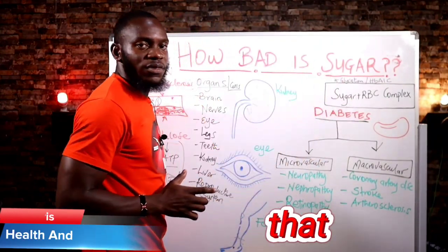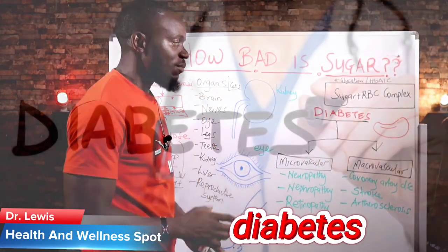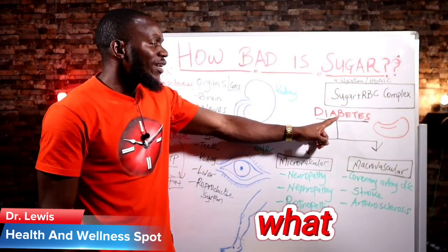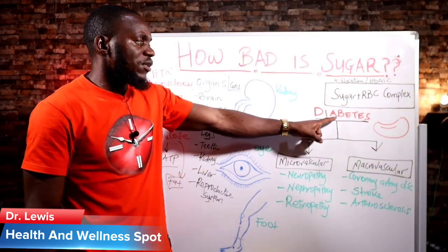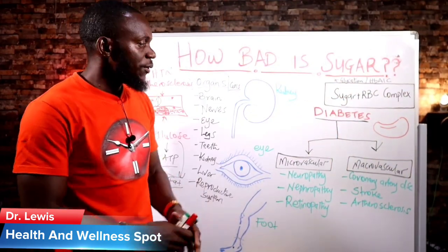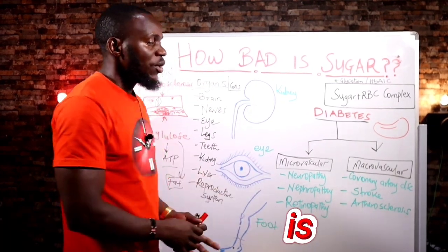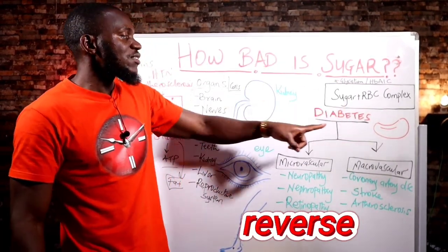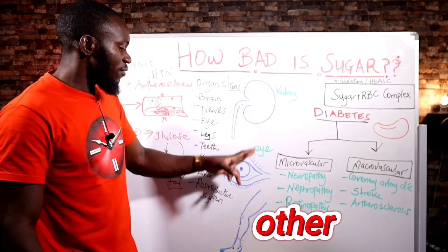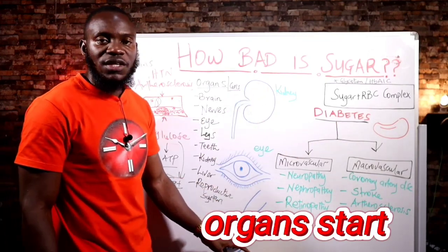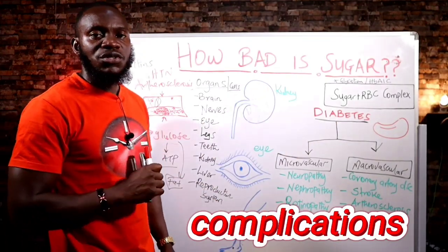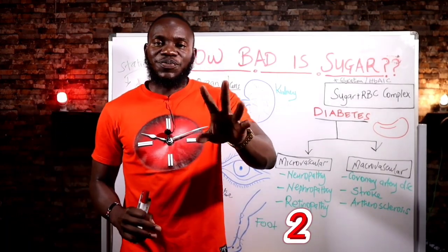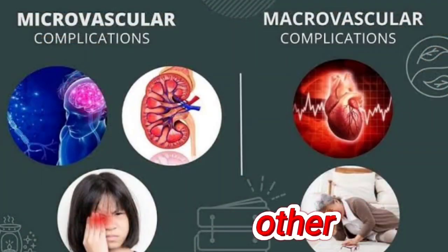You have excess sugar already in your system — that is what we call diabetes mellitus. Our reasoning here is we want to clear sugar so that we reverse diabetes, so that all these other body organs start to function. So what are the complications of sugar and diabetes in the system? There are two: one is the macrovascular and the other one is the microvascular.